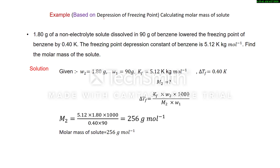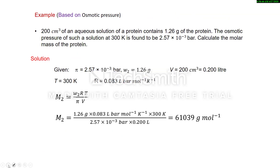Next, again based on depression of freezing point, we are calculating the molar mass of solute. 1.80 gram of a non-electrolyte solute dissolved in 90 gram of benzene lowers the freezing point of benzene by 0.40 K (Kf is given). Note that this may also be given as 0.40°C — we use only the magnitude. Given: w2 = 1.80 gram, w1 = mass of solvent, Kf, and delta Tf. Use the formula: delta Tf = Kf × w2 × 1000 / (M2 × w1). Put in the values and solve; the molar mass comes to 56 gram per mole.